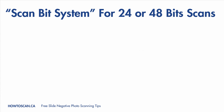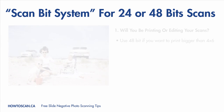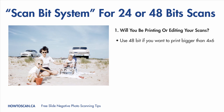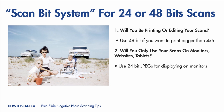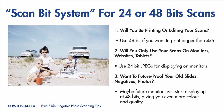I want to give you a system to help you decide when to use 24 or 48 bits — I call it the scan bit system. Number one: will you be printing your scans bigger than 4x6? If yes, use 48-bit TIFF scans. Remember, 48 bits has a smoother color gradient, and if you reprint JPEGs bigger than 4x6, you'll get that choppy color gradient look. Number two: will you only use your scans on monitors, websites, or tablets? If yes, use 24-bit JPEGs. Every monitor displays only at 24 bits, so you can't see the difference anyway. Also, a 48-bit scan will be around 100 megabytes — 10 scans will be about 1 gig — and RAW or TIFF files are too big for the web. Number three: if you want to future-proof your old slides, negatives, and photos, then use 48 bits.